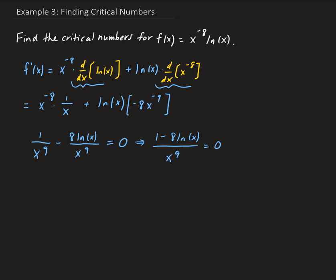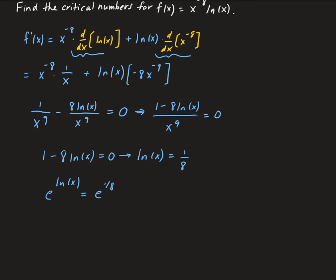To solve this, we just look at the numerator — or equivalently multiply both sides by x to the ninth — leaving us with one minus eight times natural log x equals zero. This gives natural log x equals one eighth. Taking the exponential of both sides: e to the natural log x equals e to the one eighth, so x equals e to the one eighth, which is the same as the eighth root of e.